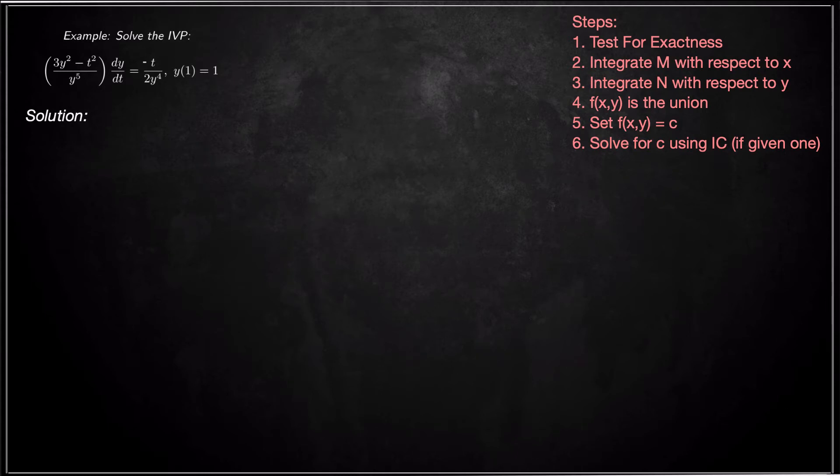Hey guys, what's up? Today we're looking at solving a differential equation initial value problem. The differential equation is (3y² - t²)/y⁵ dy/dt equals -t/(2y⁴).